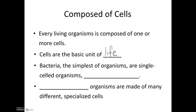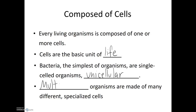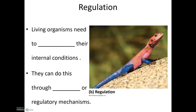Bacteria, the simplest of all organisms, are single-celled organisms, or unicellular. Multicellular organisms are those composed of many different specialized cells. So having cells and being organized is one characteristic of life.